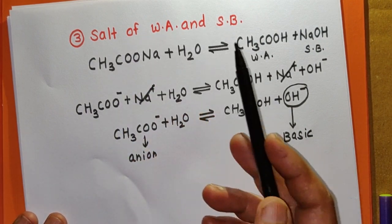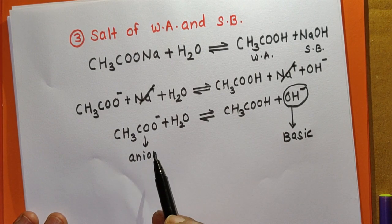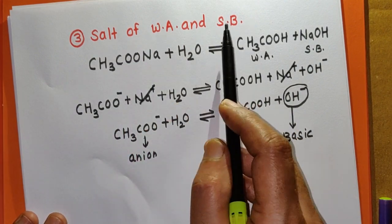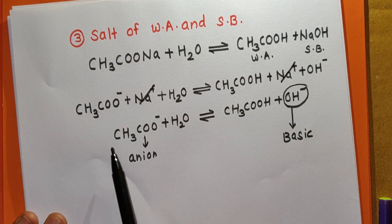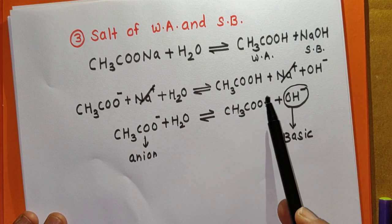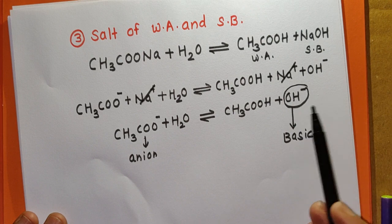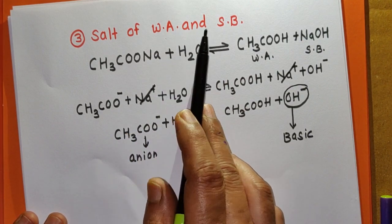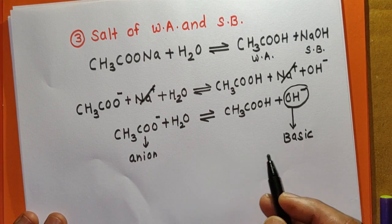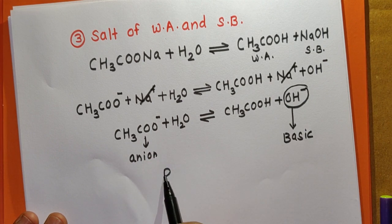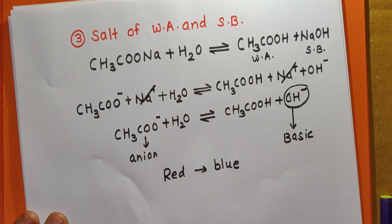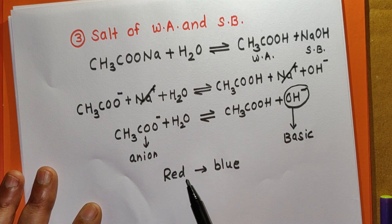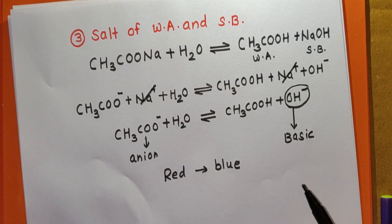For the salt of weak acid and strong base, hydrolysis is defined as the reaction in which the anion of the salt reacts with water to give a basic nature to the solution. For any example of this type of salt, the anion reacts with water, producing weak acid and free OH⁻ ions, making the solution basic. As a result, red litmus turns to blue in the aqueous solution of such a salt.